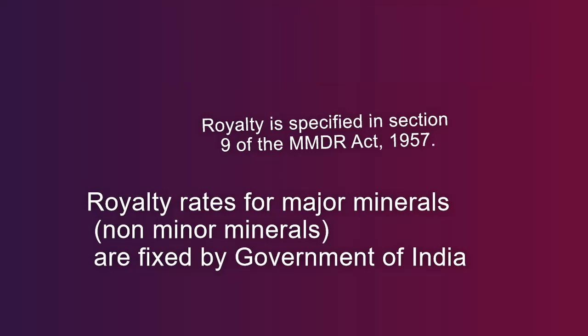Under MM(D)R Act 1957 and 1948, there are two categories of minerals: one is major minerals and the other is minor minerals. Royalty rates for major minerals can be fixed by the Government of India, while royalty for minor minerals can be fixed by the respective state governments.